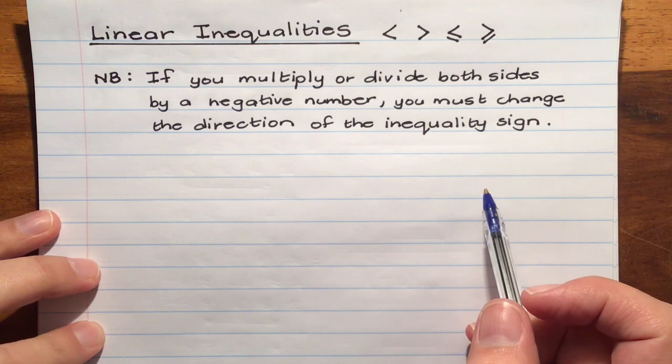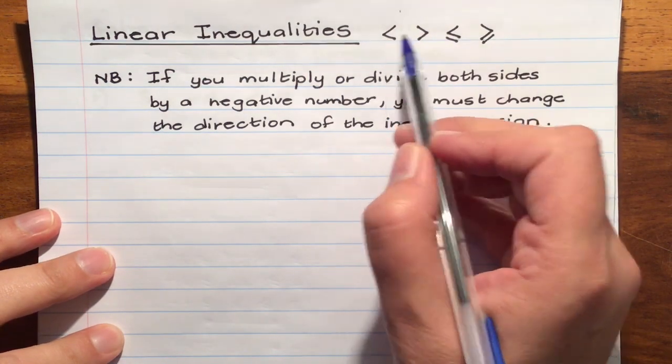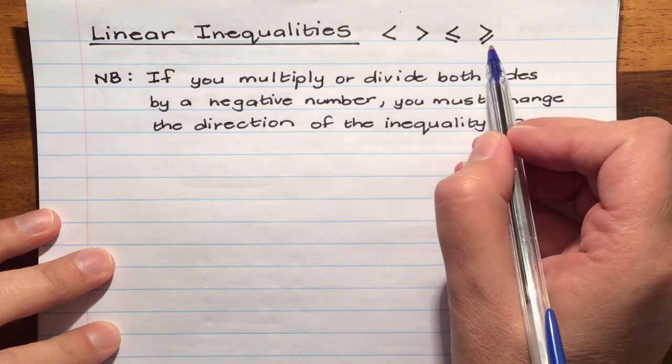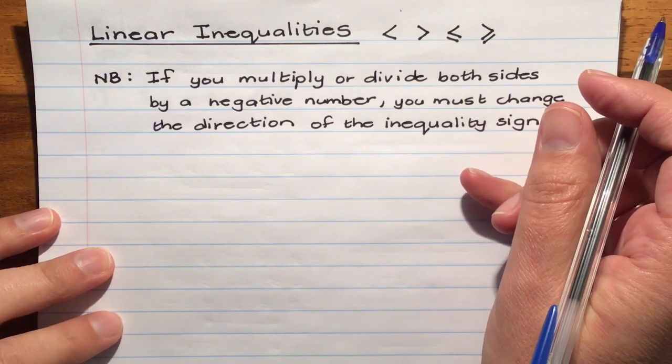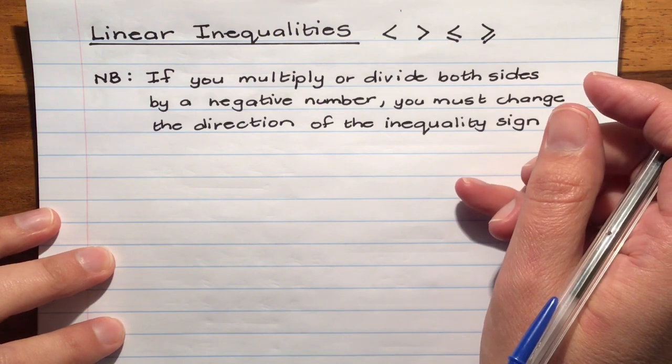Now they are almost like linear equations except instead of having an equal sign you've got either a less than or greater than sign, or less than or equal to sign, or greater than or equal to sign.